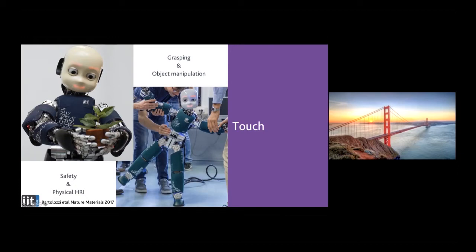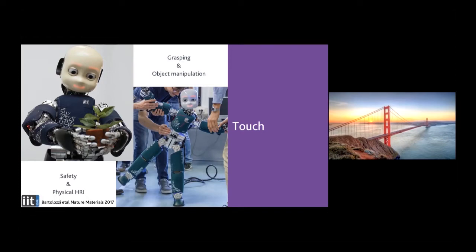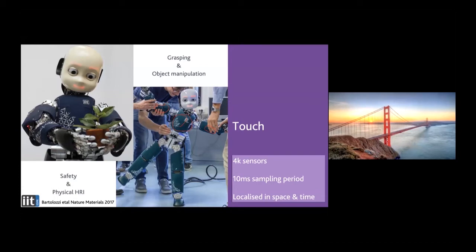If you look here, you see the iCub robot — where you see the fabric, it's fully covered with tactile sensors, exactly to sense contact with the environment and with people. The robot has more than 4,000 sensors in what is called the large area skin.